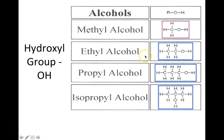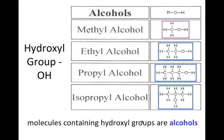Ethyl alcohol is the drinkable alcohol found in beer, wine, and distilled spirits. Methyl alcohol is called wood alcohol and is sometimes used as a flammable fuel for heating. Isopropyl alcohol is rubbing alcohol. Any molecule that contains a hydroxyl group as part of its structure is generally called an alcohol.